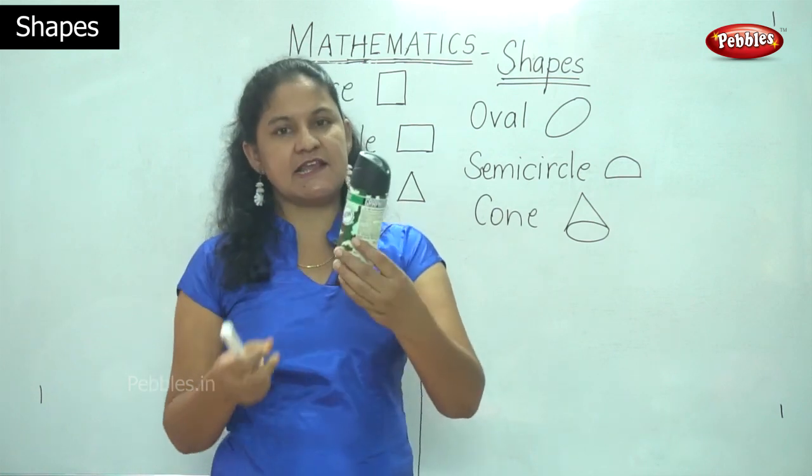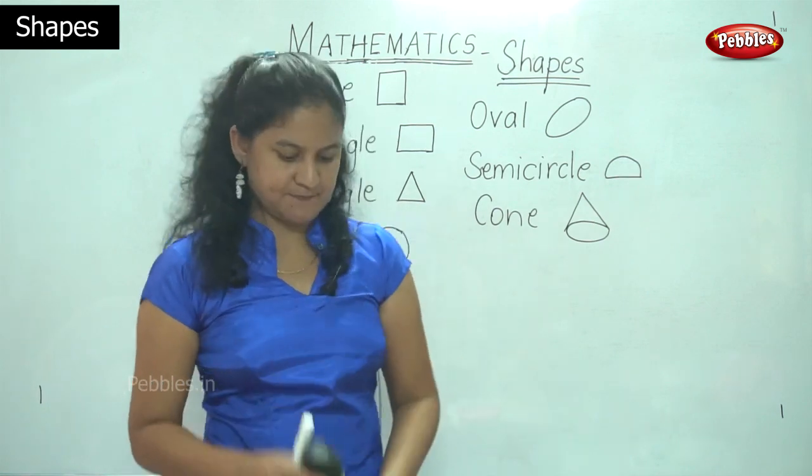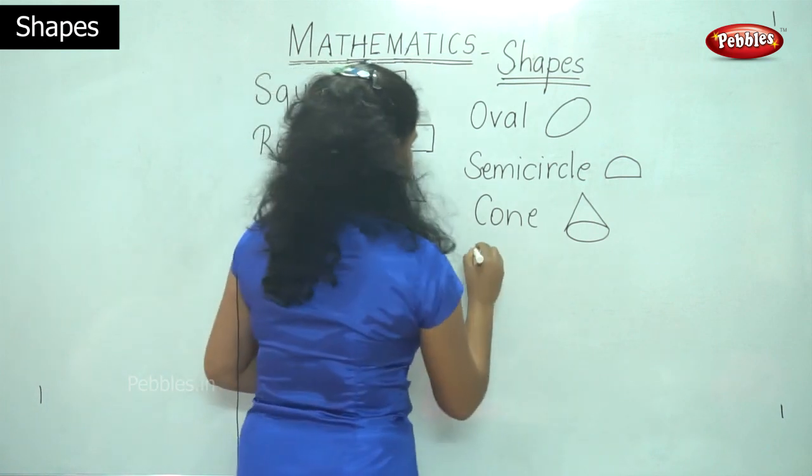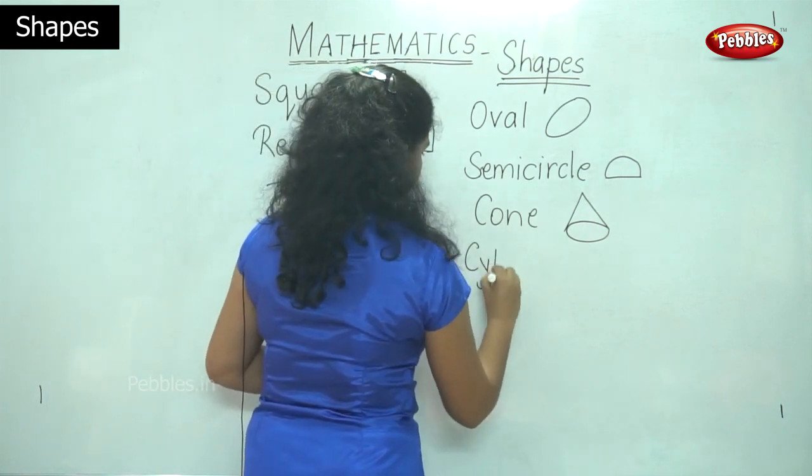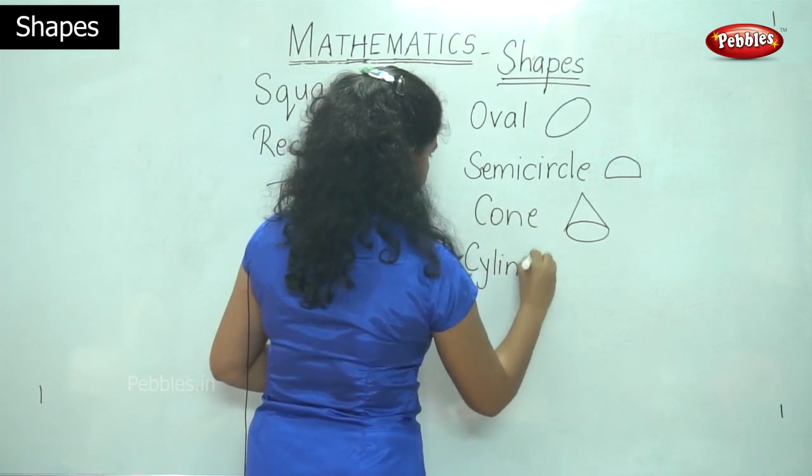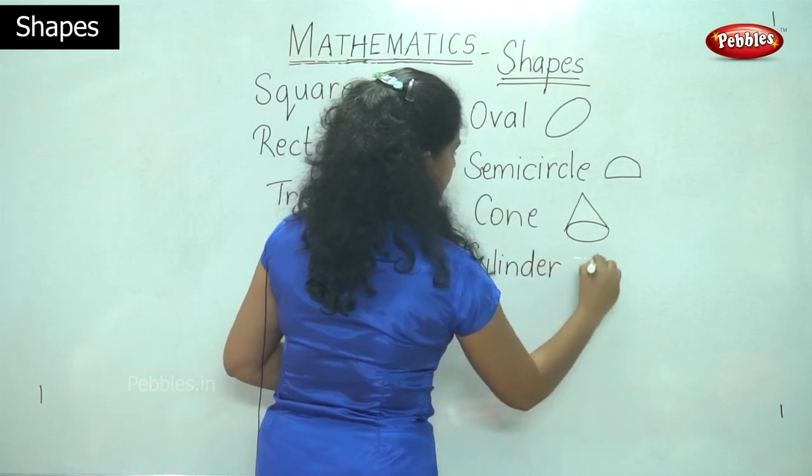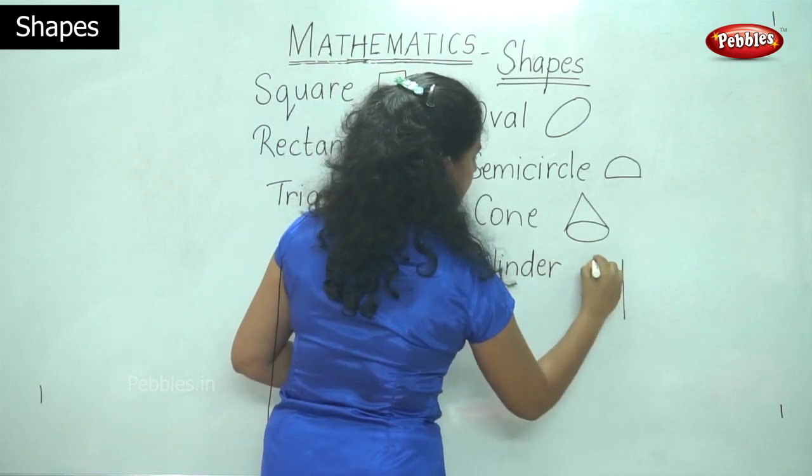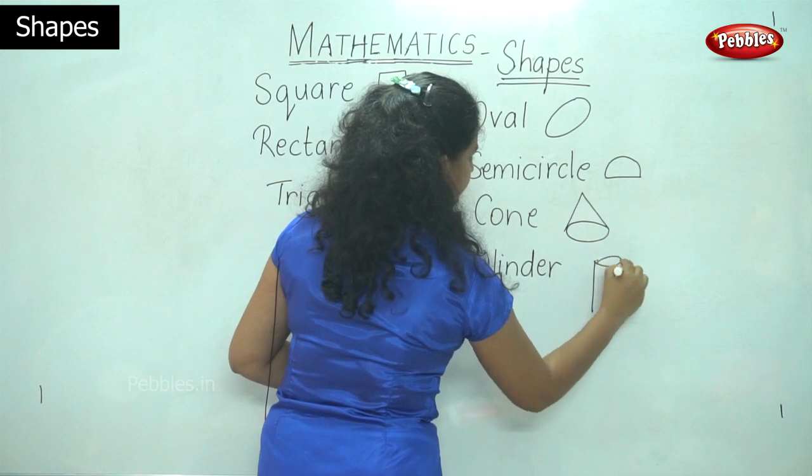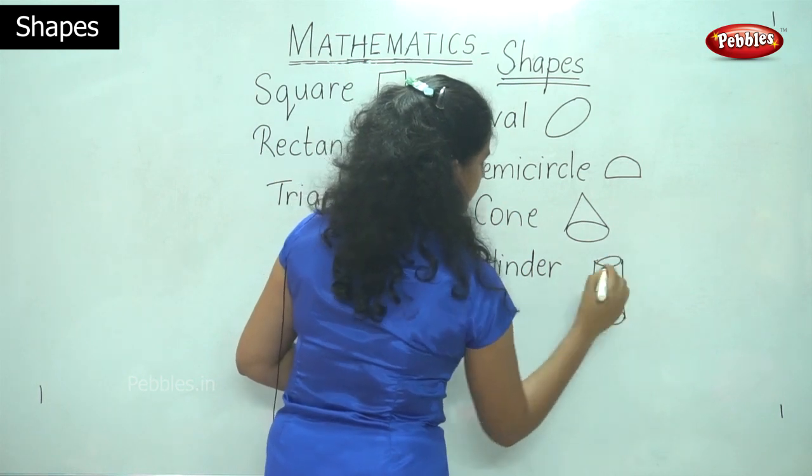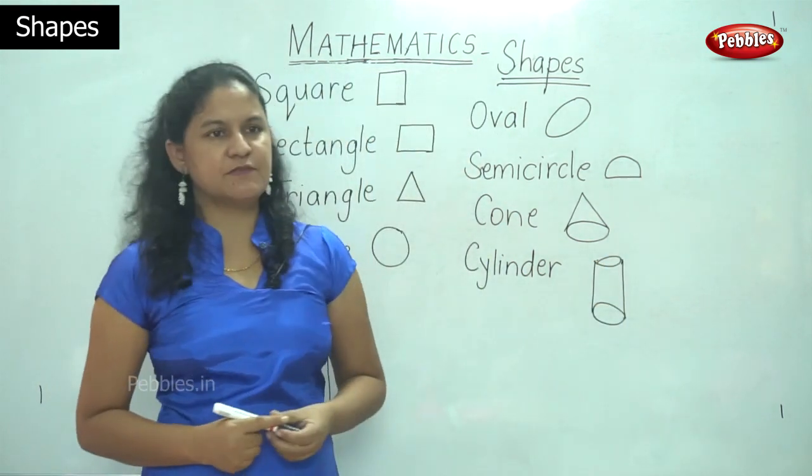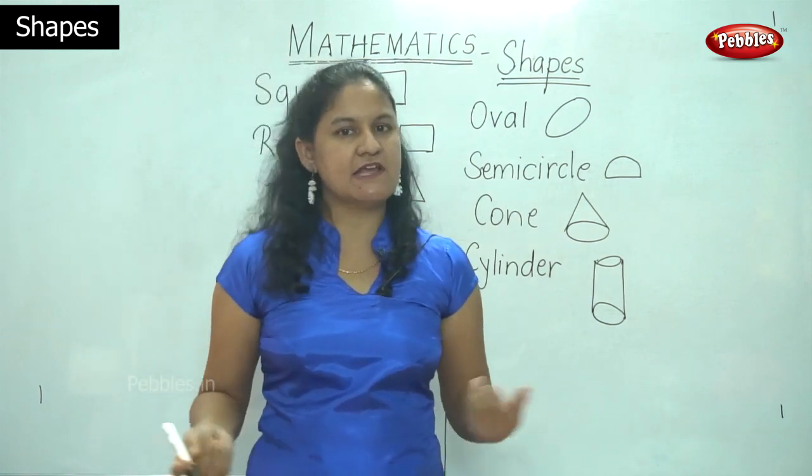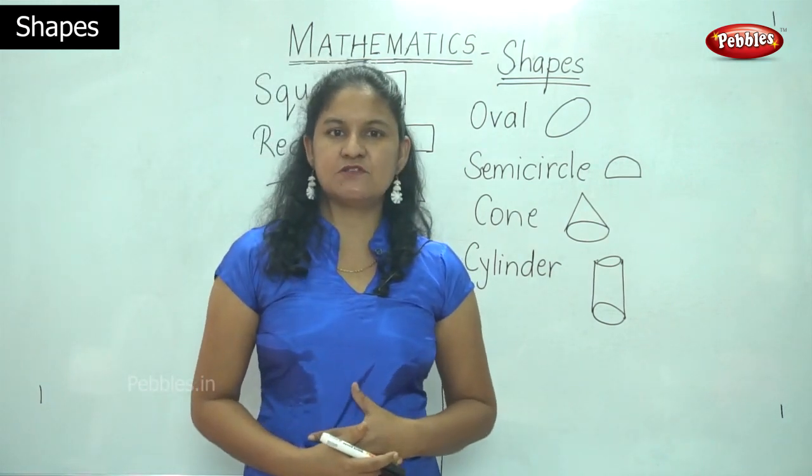And the next we have, this is an example of a cylinder. So the example of a cylinder. So there are different examples like the gas cylinder that we use at homes. They are all examples of cylinders.